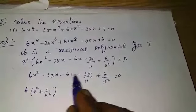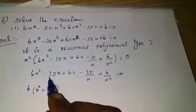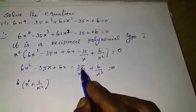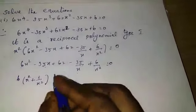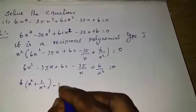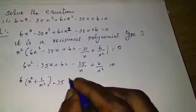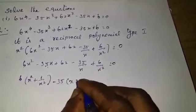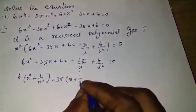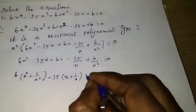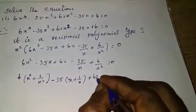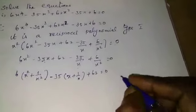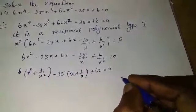Compare these two terms: minus 35x minus 35 by x. Minus 35 is common, giving minus 35 times (x plus 1 by x). Combined with 62, we get 6(x² plus 1 by x²) minus 35(x plus 1 by x) plus 62 equal to 0.